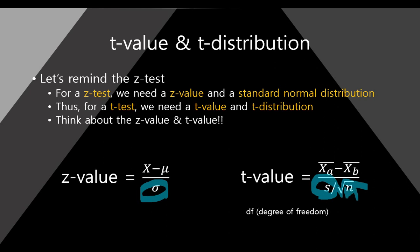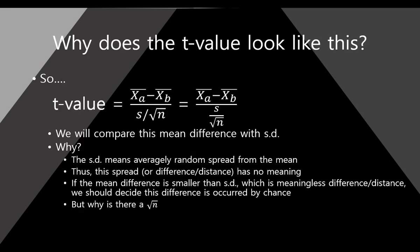It looks very strange to you, but I will explain one by one. Different from the z-value, in the t-value we have a new concept: the degree of freedom. This name is very tricky, and many students just give up statistics at this point — they don't know what the degree of freedom is and nobody explained it. But I will explain this part for you. Why do we call this one the degree of freedom? Anyway, let's move to the next slide.